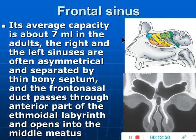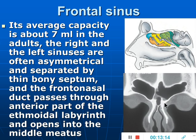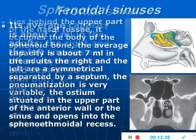The frontal sinus lies in the body of the frontal bone. The average capacity is 7 cc in adults. The right and left sinuses are often asymmetrical. The frontal nasal duct drains the frontal sinus into the nasal cavity. It passes through the anterior part of the ethmoid and then opens into the middle meatus.